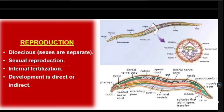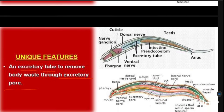Going for the reproduction methods, Aschelminthes are dioecious in nature, meaning their sexes are separate. Male and female Aschelminthes are entirely separate. Mostly, the female will be somewhat longer than the male. They undergo a sexual mode of reproduction and show internal fertilization. Development is direct, or in some cases indirect, involving larval forms.